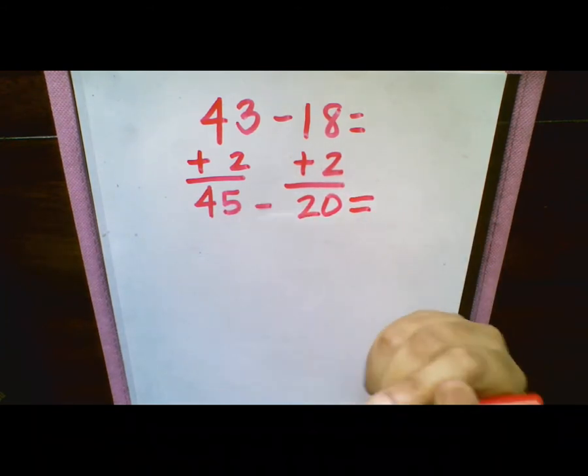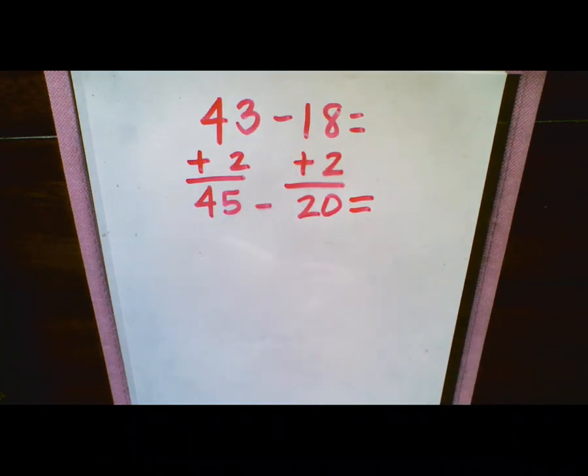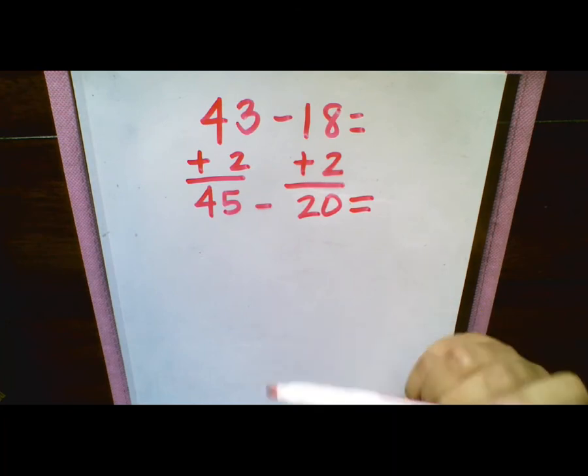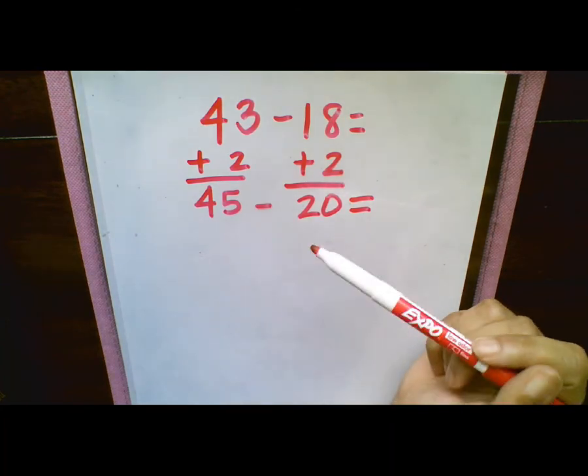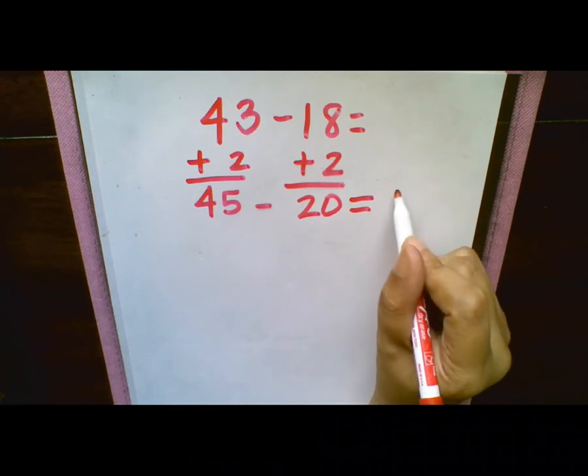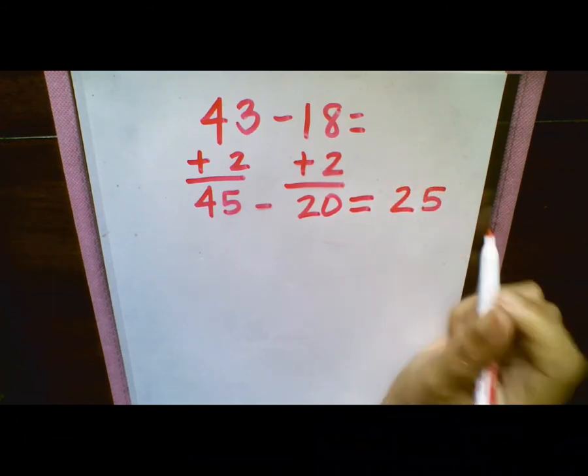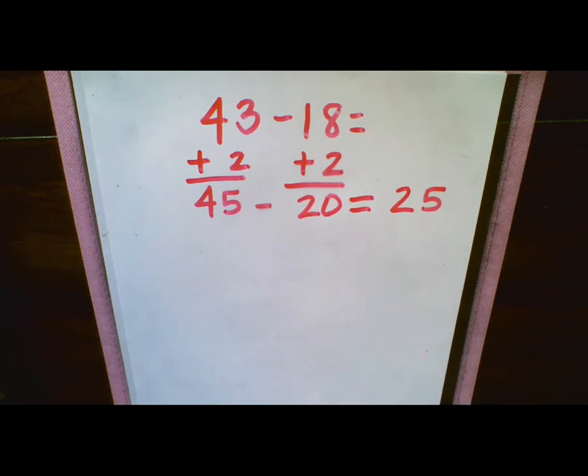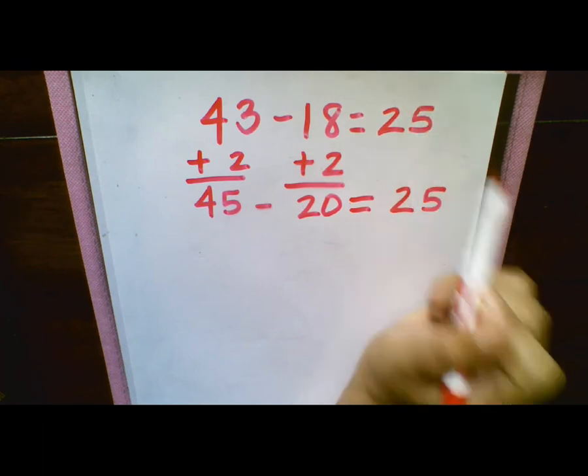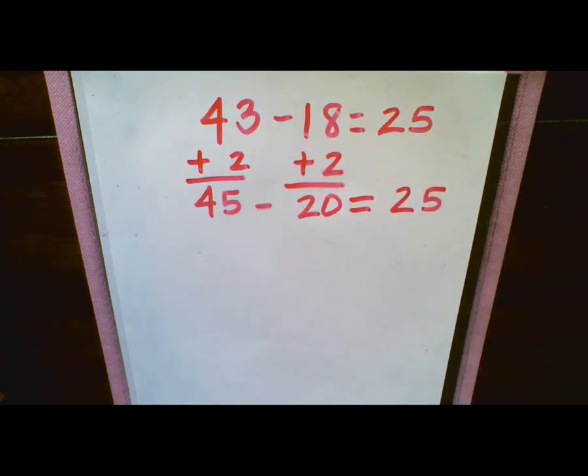So now, again, we want to get in the habit of trying to do these mentally, but that's okay if you can't. So if we were to do this mentally, we were to subtract 45 from 20, we would get 25. Because 20 plus 20 would be 40, then add our 5 and get 25. So 43 minus 18 is 25. So that's one way to do this.